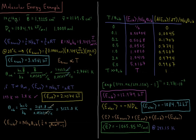Let's say we have the carbon monoxide molecule — the C12O16 isotope. The rotational constant of that molecule is 1.9225 wavenumbers. The vibrational constant is 2169.8 wavenumbers. The dissociation energy is 1084.92 kilojoules per mole, and let's assume that we have one mole of this particular sample of CO.